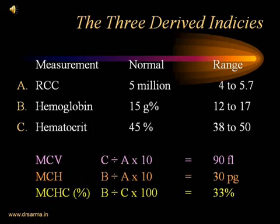In our anemic patient, we now have 3 basic primary measures: RCC (normal 5 million), hemoglobin (normal 15 grams percent), and hematocrit (normal 45%). From these, we derive 3 other indices called the derived indices. Most of the time these look confusing — we learned about them in physiology but most of us have forgotten how to work them up and rely on the lab report.